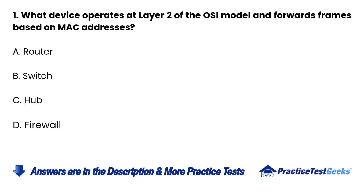Question 1: What device operates at layer 2 of the OSI model and forwards frames based on MAC addresses? A. Router. B. Switch. C. Hub. D. Firewall.